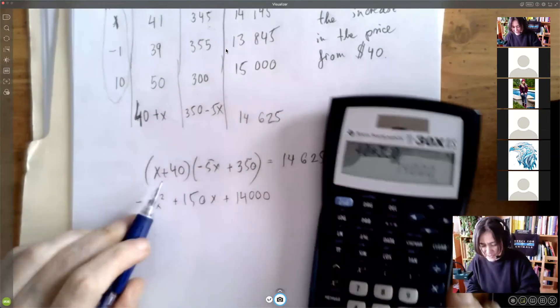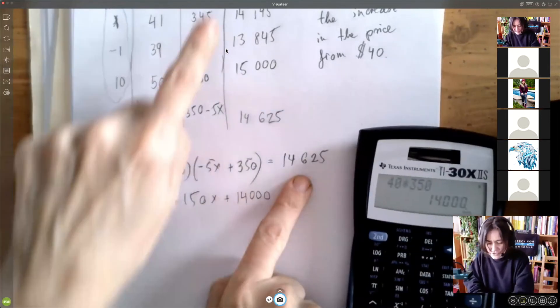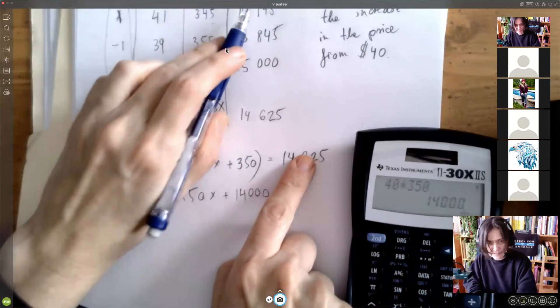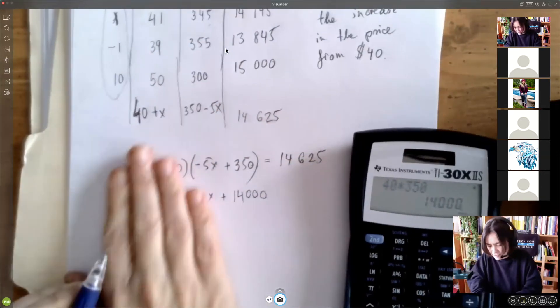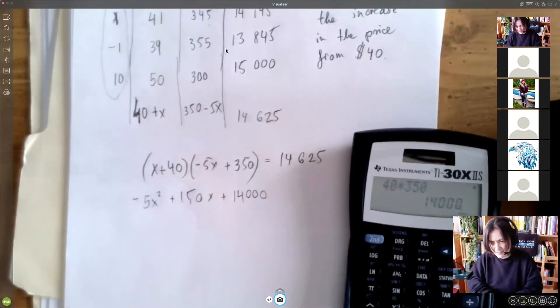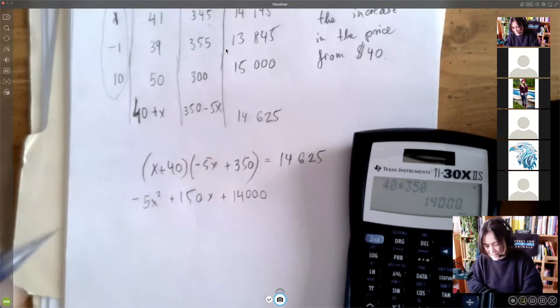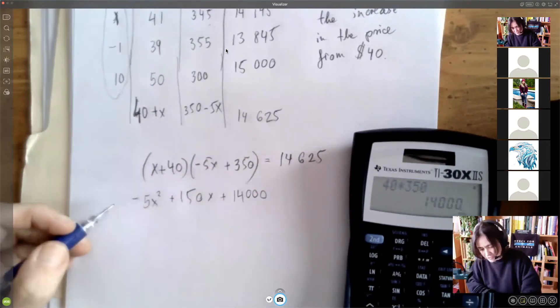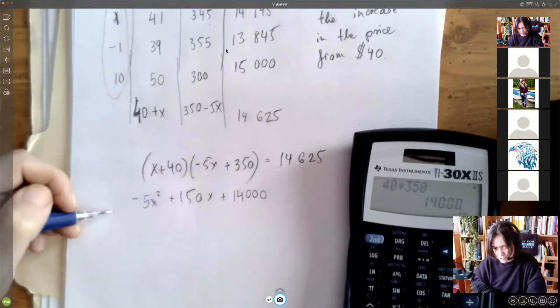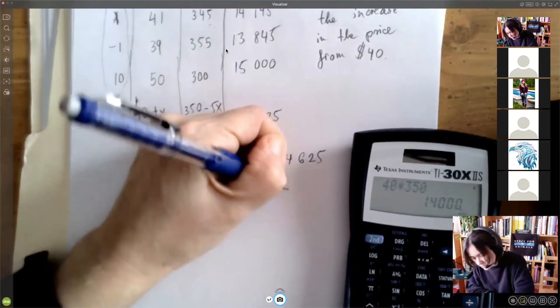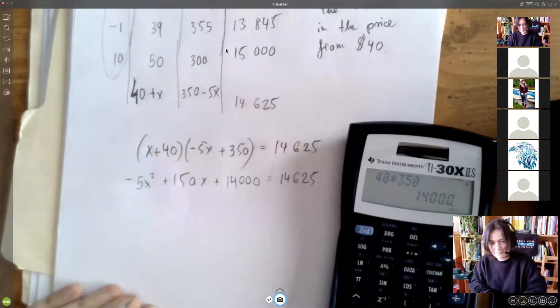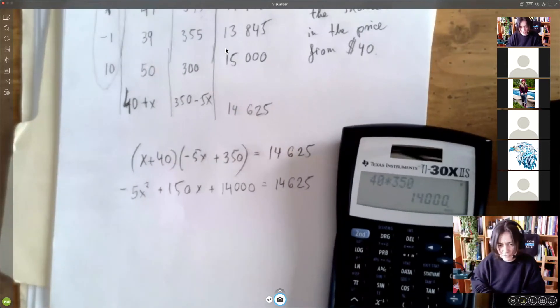Because let's just check 40 times 350. If X is 0, this should be 14,000. You see, if X is 0, we're making 14,000. This is, in terms of X, the revenue. This is the revenue as a function of X. And this should equal 14,625. And that's our quadratic equation to solve.